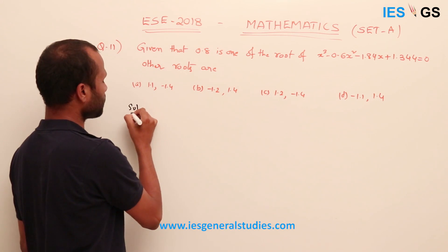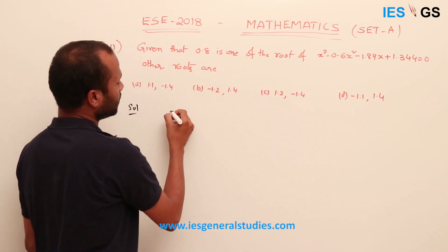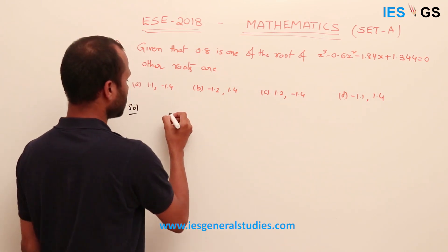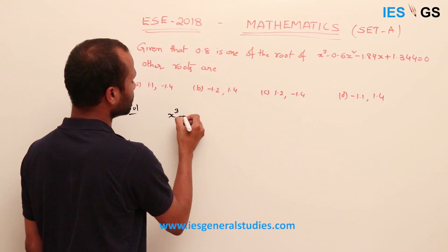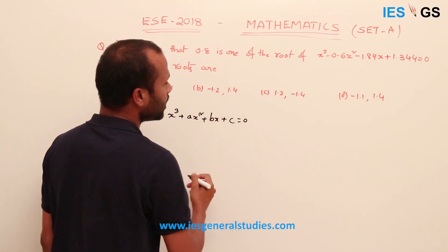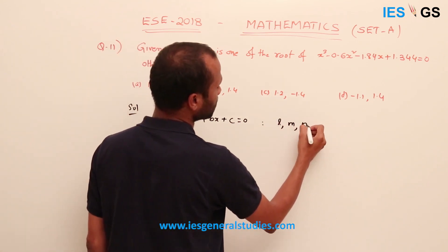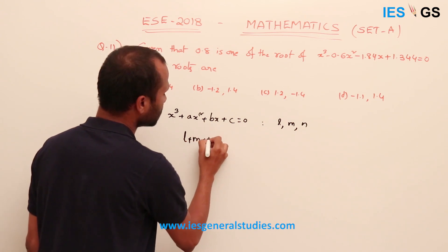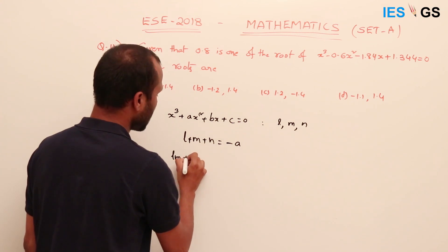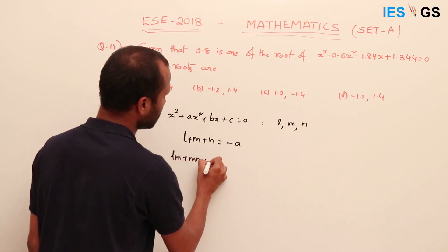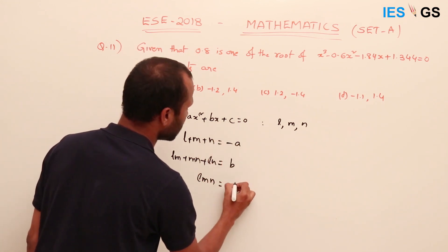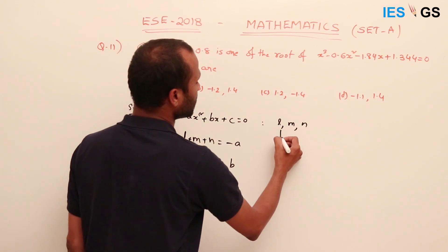For a general third-order equation of the form x³ plus ax² plus bx plus c equals 0, if l, m, n are the roots, then we know: the sum of the roots l plus m plus n equals minus a; l·m plus m·n plus l·n equals b; and l times m times n equals minus c.